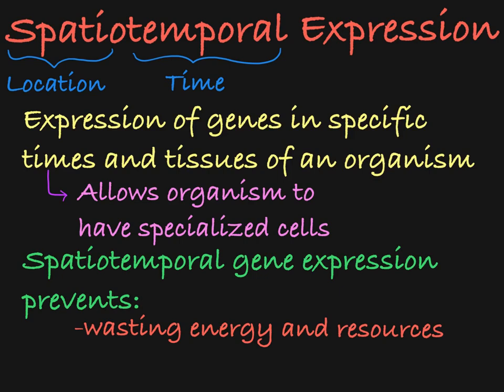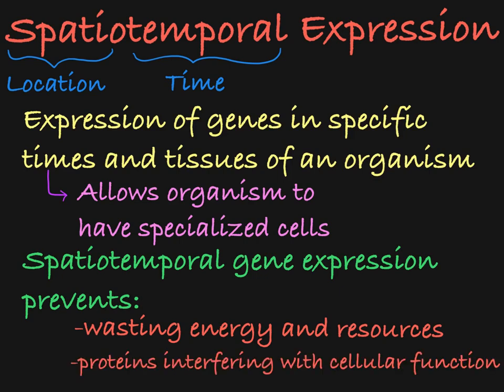Along the same lines, there are certain proteins that are only necessary at specific stages in the cell cycle. Being able to control when a gene is expressed limits the production of that protein to only times that it's needed, while also preventing that protein from interfering with processes that it should not be involved in.